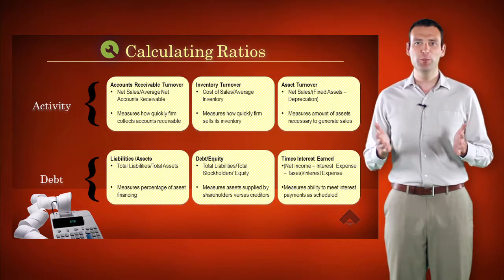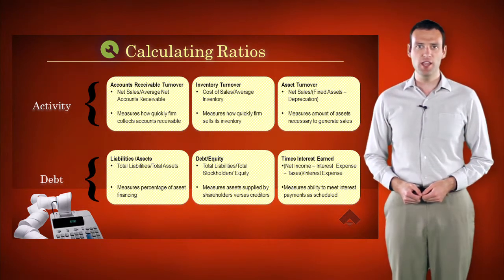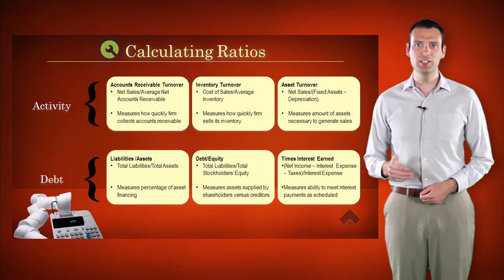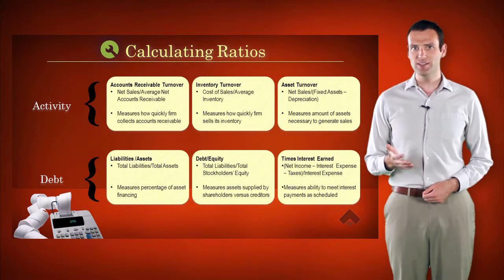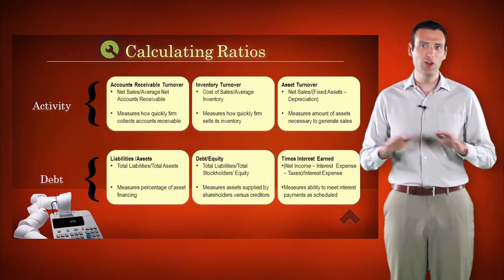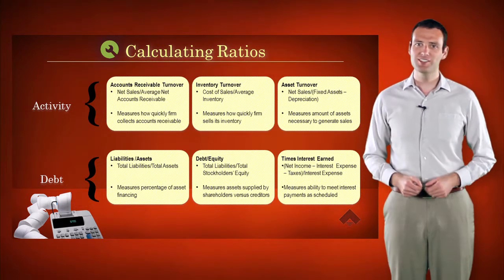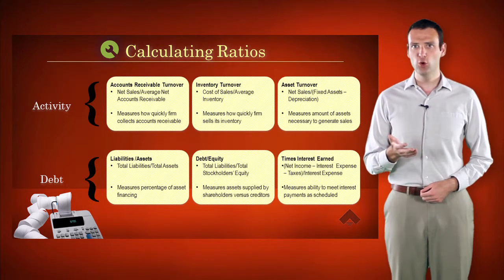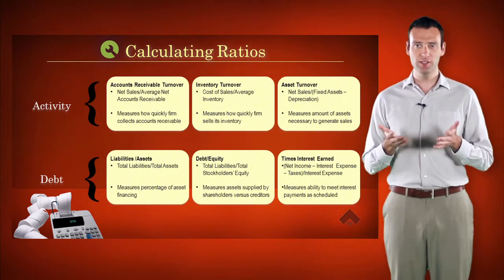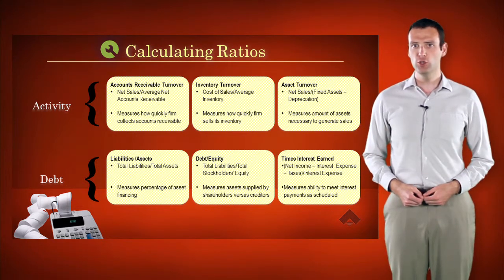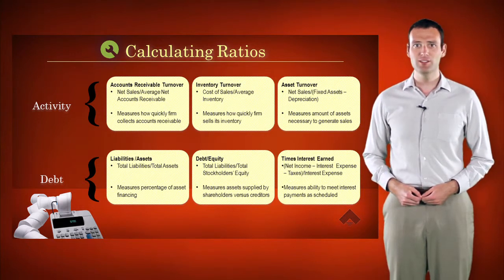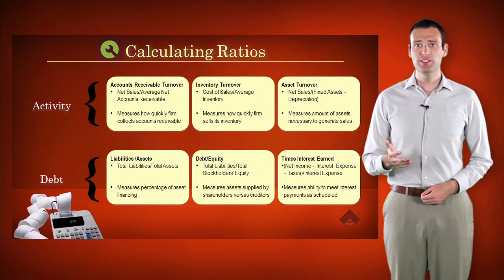Asset turnover measures the amount of assets necessary to generate sales and is calculated by dividing net sales by total assets, minus any depreciation. The ideal asset turnover ratio — infinity divided by zero — means unlimited sales using no assets, but this never happens. A more reasonable goal is to enlist as few assets as possible to generate as much income as possible. From this you can conclude that bulking up the balance sheet does not necessarily indicate that a company is making money. Now we'll look at the debt ratios.